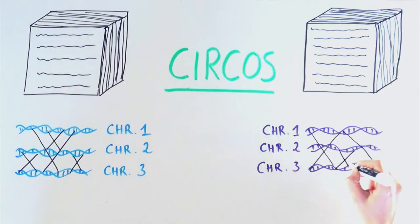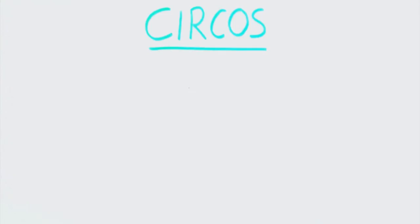Instead, CIRCOS visualizes genomics data in a circle, like scientists have done for decades to visualize bacterial DNA, which is naturally circular. This new method of visualizing our genome works like this.